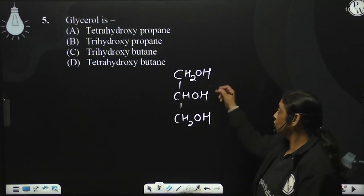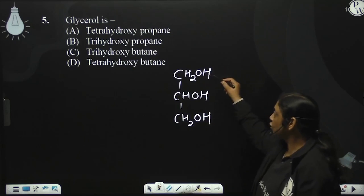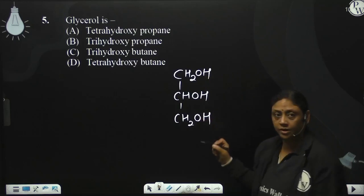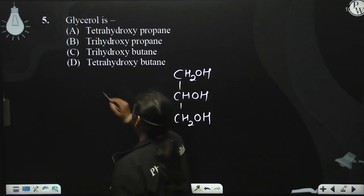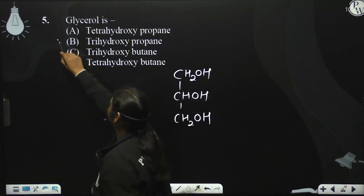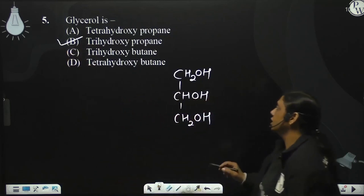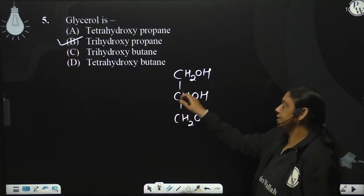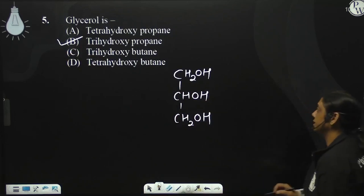1, 2, 3-trihydroxy — the OH group is present, this is why it is called hydroxypropane. So it is trihydroxypropane, that is the right answer. Propane is this, because here are 3 carbons, this is why propane. So it is the right answer.